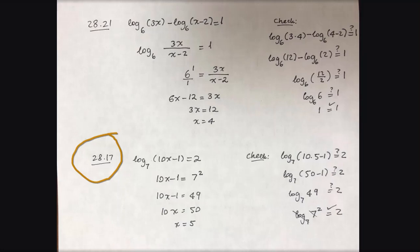So in this problem, we have log base 7 of 10x minus 1 equals 2. This is just a single logarithmic expression on the left. We can immediately convert this to exponential form.